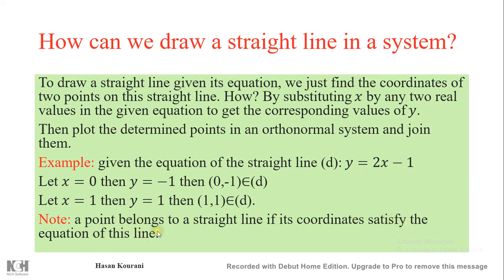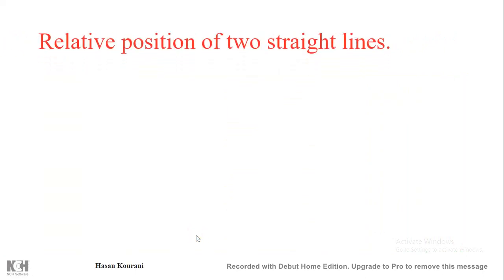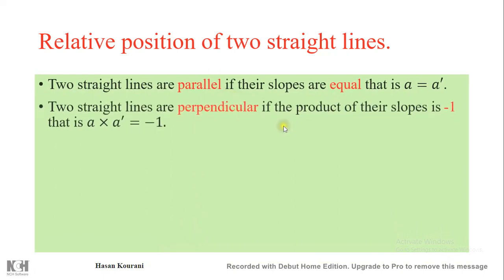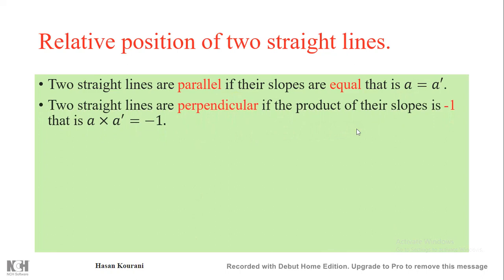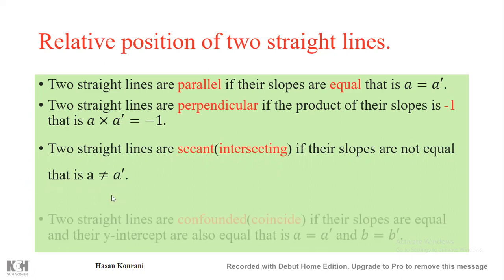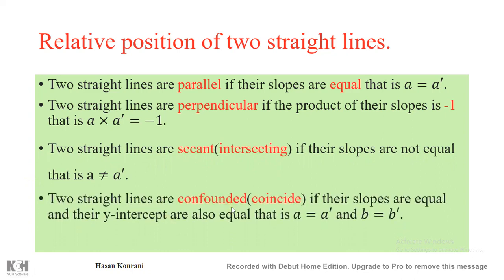Relative position of two straight lines: two lines are parallel if their slopes are equal; perpendicular if the product of their slopes is −1; secant (intersecting) if their slopes are not equal; and coincident (confounded) if their slopes are equal and their y-intercepts are also equal — they represent the same line.